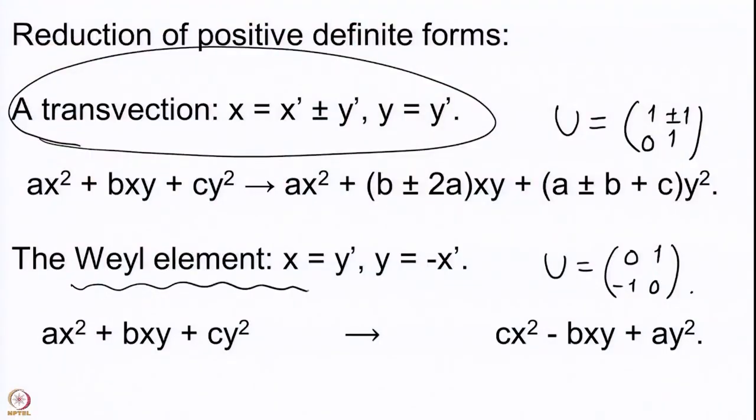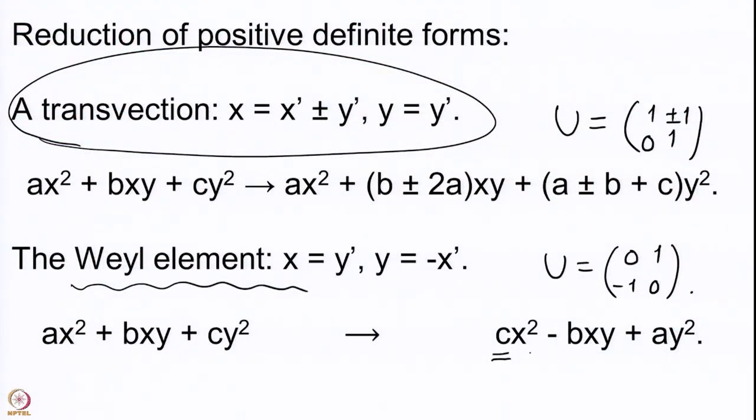The Weyl element generates what is called the Weyl group of the matrix group SL2, and it is represented by the matrix [0, 1; −1, 0]. The Weyl element switches x and y with a sign change. So for the form ax² + bxy + cy², the coefficients a and c are switched, but the coefficient b acquires a different sign. While the places of a and c are switched, the change in b is just a change of sign.